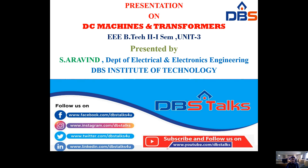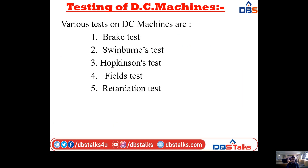I will discuss one by one. The various tests on DC machines are: first, brake test; second, Swinburne's test; third, Hopkinson's test; fourth, field test; and fifth, retardation test. These five tests are conducted on a DC machine to determine the efficiency and losses.